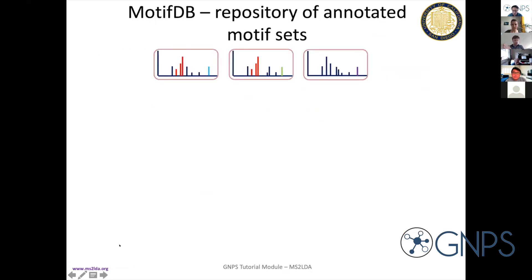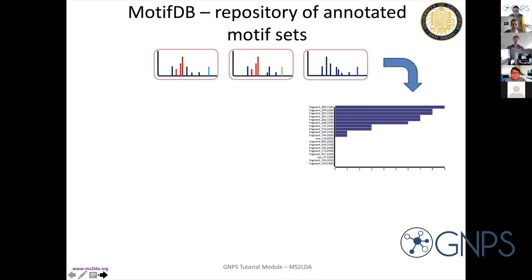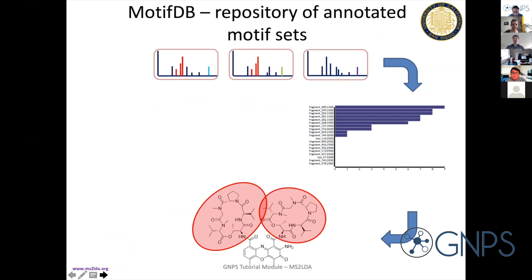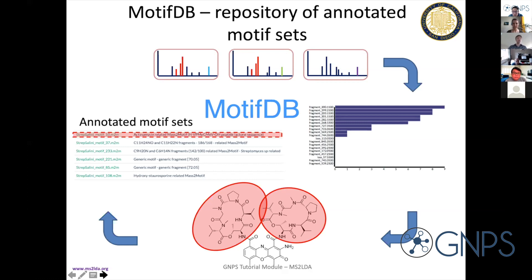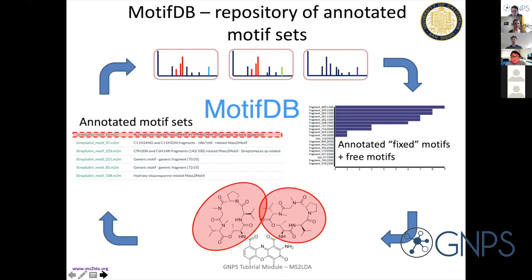In MotifDB, this is an example of how I added motives to the database. I encountered a motive from a Streptomyces dataset and managed to annotate it using literature — I found that all these different fragments co-occur and point to this lactone ring in the actinomycin D molecule. I was able to do this for tens of motives in the Streptomyces dataset. This is now one of the predefined motives you will find in MotifDB — so next time someone runs a Streptomyces-related dataset, you can take that motive set and you don't need to annotate all those motives again. And you can all now start to contribute to MotifDB with your annotated motives.